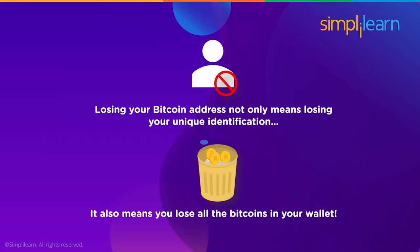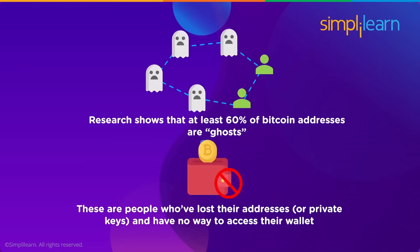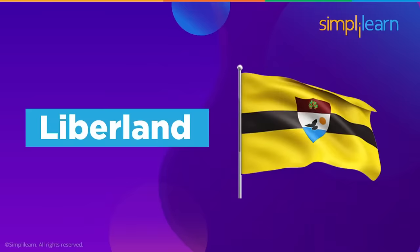Losing a Bitcoin address — also known as your private key — not only means losing your unique identification, it also means you lose all the bitcoins in your wallet. Research shows that at least 60% of all Bitcoin addresses are ghosts, meaning a huge chunk of the population using the Bitcoin network have lost their addresses and have no way to access their wallets.